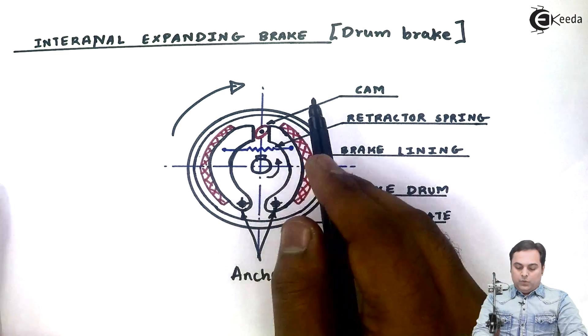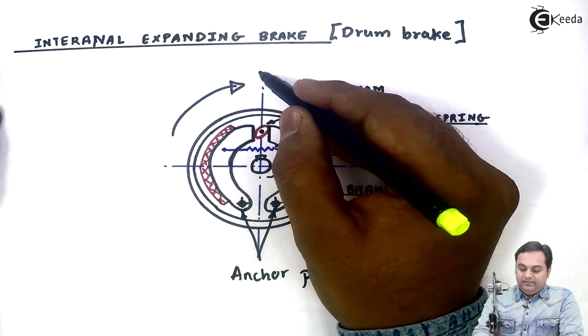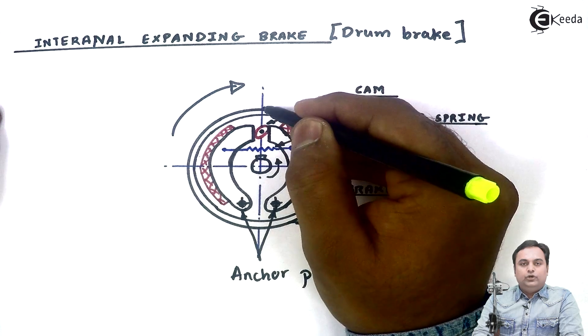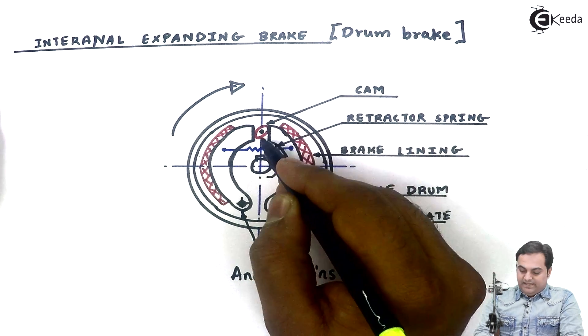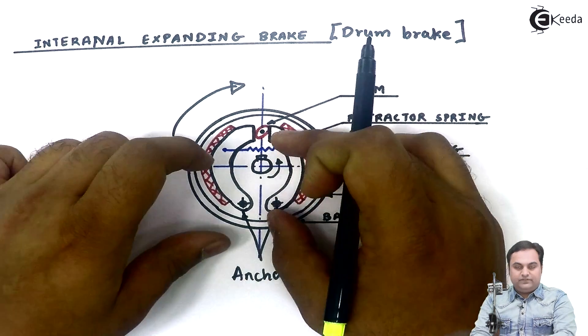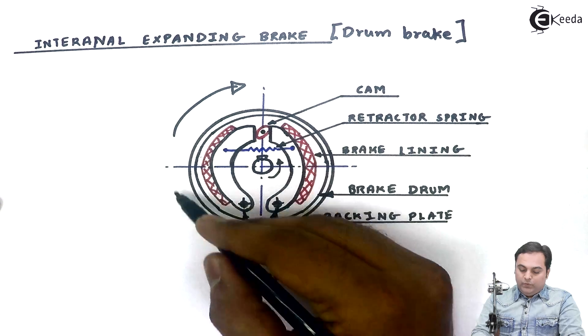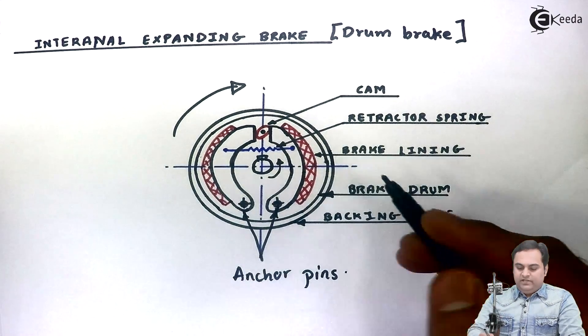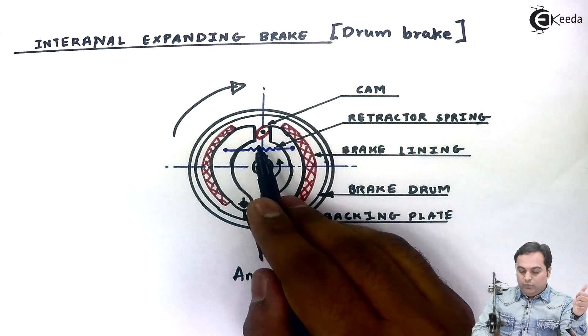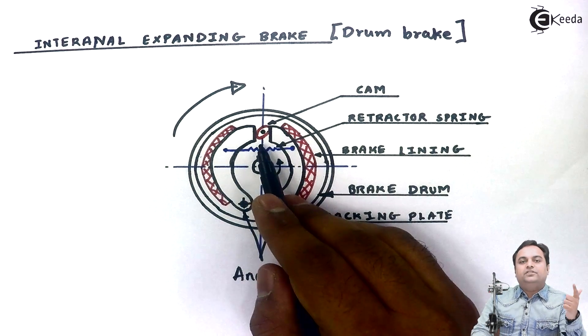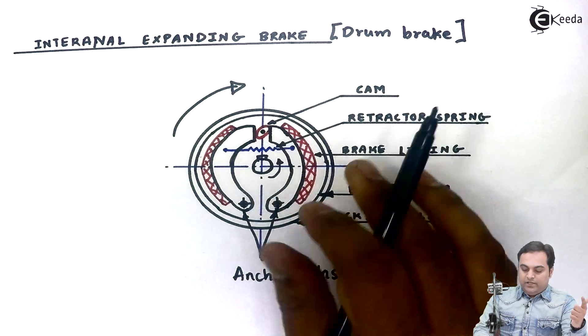Instead of cam, we can even have here cylinder and piston arrangement. The brake fluid will enter. It will push the piston on both the sides. And then because of that pistons, the brake lining would be coming in contact with the brake drum. So that is another method of actuating the internal expanding brake. One method is we can use cam here. And the second method is we can use the piston and cylinder arrangement.